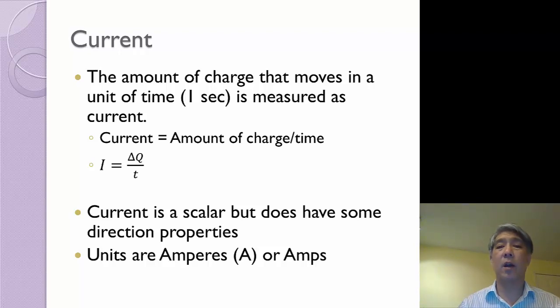Current is a scalar, but it does have some direction properties. So if I have a negative current, it implies that the current is flowing in the opposite direction. It's not a full vector, because I don't ever have to take components, but it does have a direction property in positive and negative aspects. When we get into circuits a little more, that will be a little more clear to you.